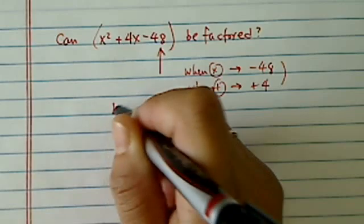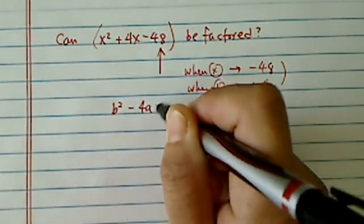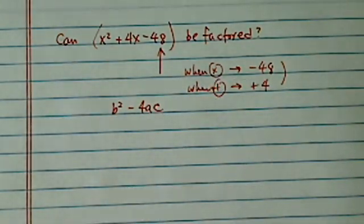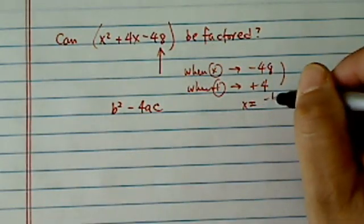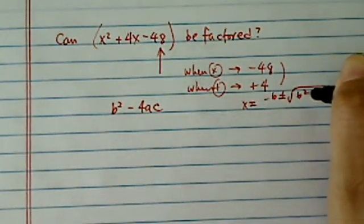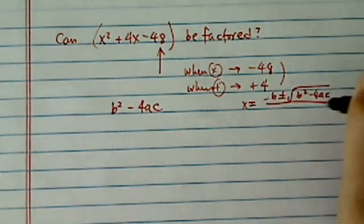So one quick way over the years I've taught my students is check out the determinant. That's the b squared minus 4ac. Now if you remember, x can always be found minus b plus minus b squared minus 4ac divided by 2a.